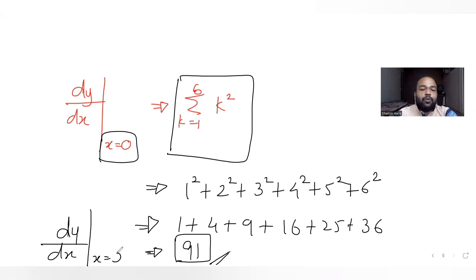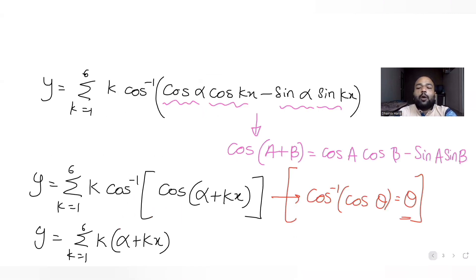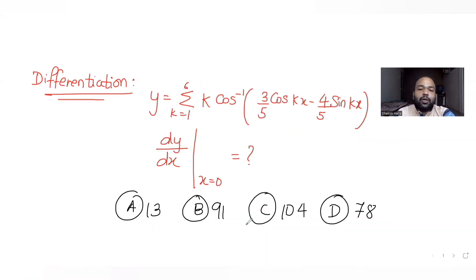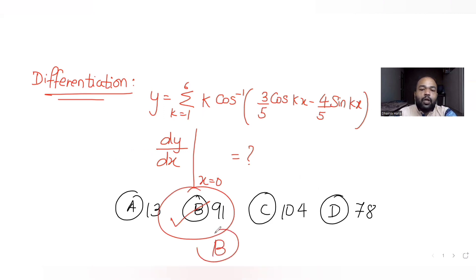The answer dy/dx at x equal to 0 is 91, which matches option B. So option B is the correct answer.